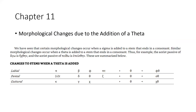Morphological changes due to the addition of a theta. We have seen that certain morphological changes occur when a sigma is added to a stem that ends in a consonant. Similar morphological changes occur when a theta is added to a stem that ends in a consonant. For example, the aorist passive of ago is echthane (ἤχθην), and the aorist passive of patho is epachthane (ἤπάχθην).